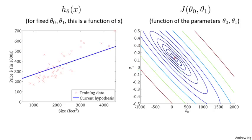This last example is actually not quite at the minimum, but it's pretty close. For a particular value of theta 0 and theta 1, we get a particular h of x, and this is not quite at the minimum but it's pretty close. The sum of squared distances between my training examples and my hypothesis is pretty close to the minimum, even though it's not quite there.